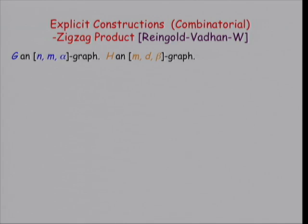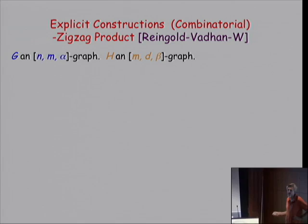That was done about 10 years ago in a paper with Rheingold and Waddan. The idea is to define a product of graphs — you want to take two graphs that will be expanders and multiply them somehow. The only important constraint is that the degree of the first, the big graph, equals the number of vertices of the small one.